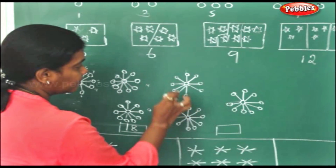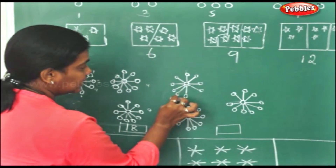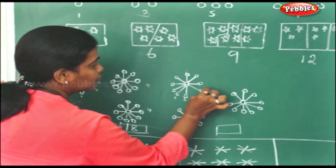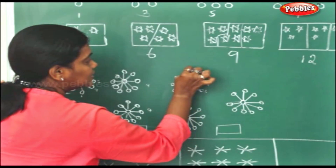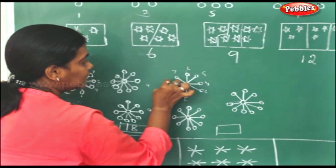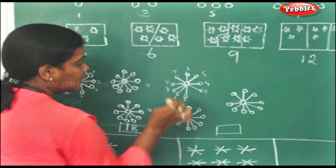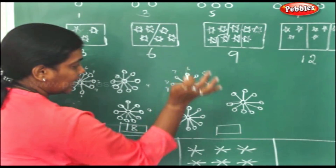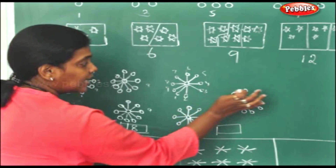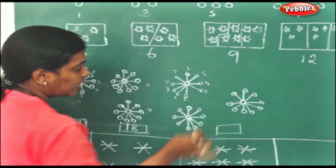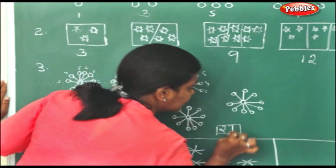Again 9 threes. 9 in each: 1, 2, 3, 4, 5, 6, 7, 8, 9. So 9 ones are 9, 9 twos are 18, 9 threes are 27.